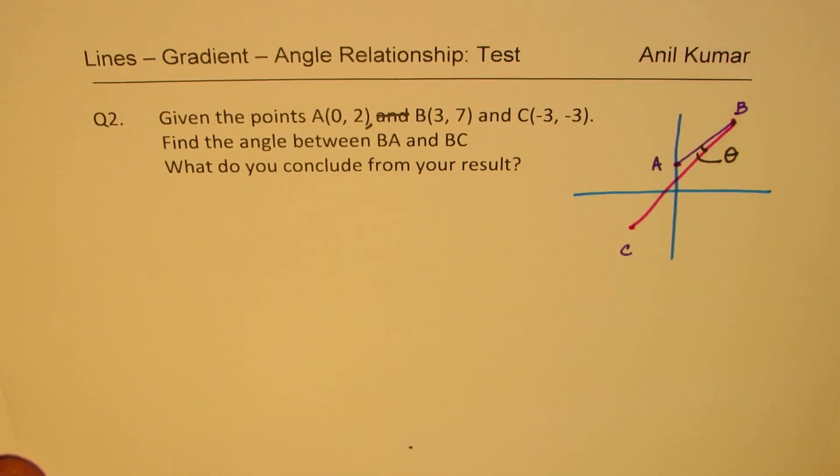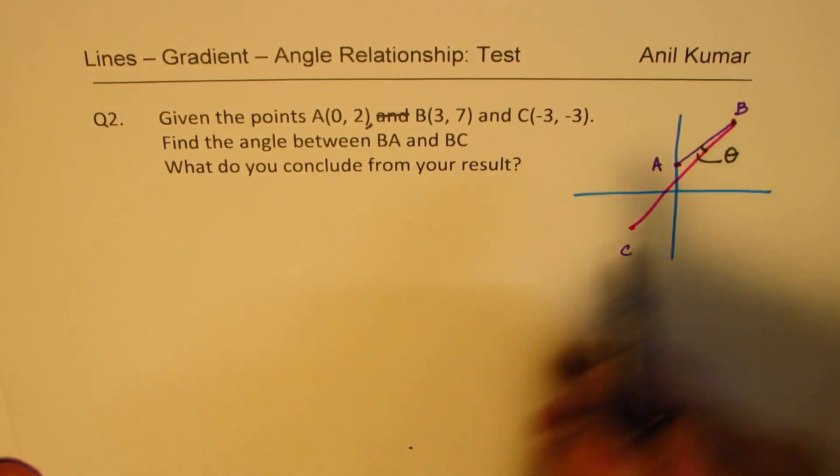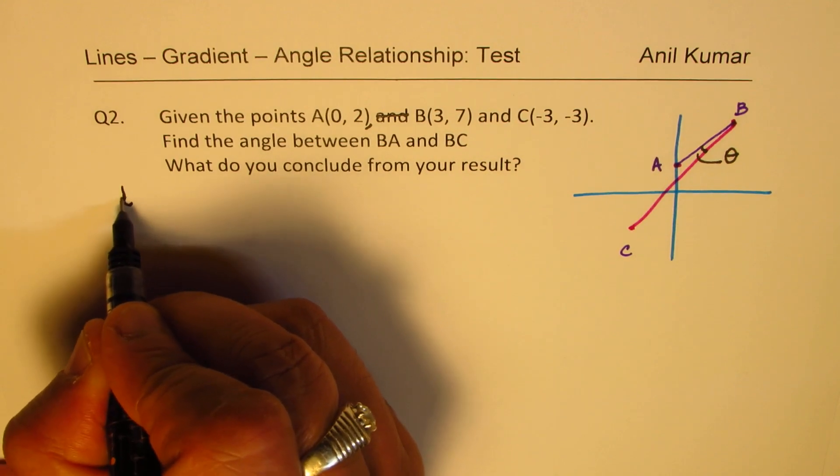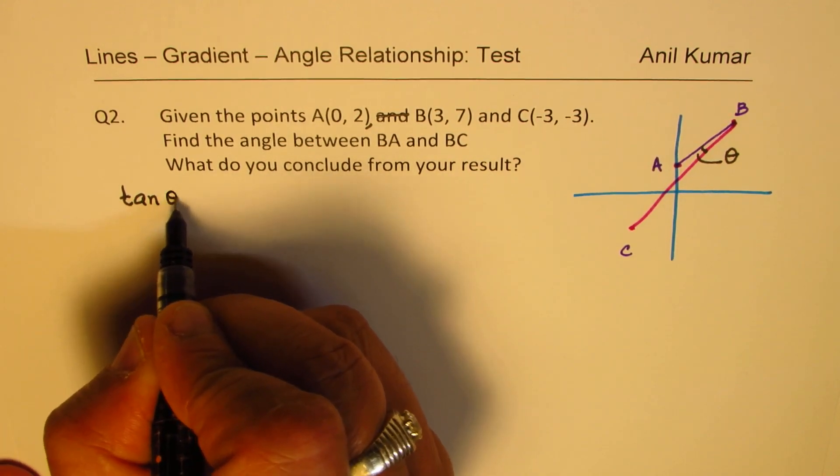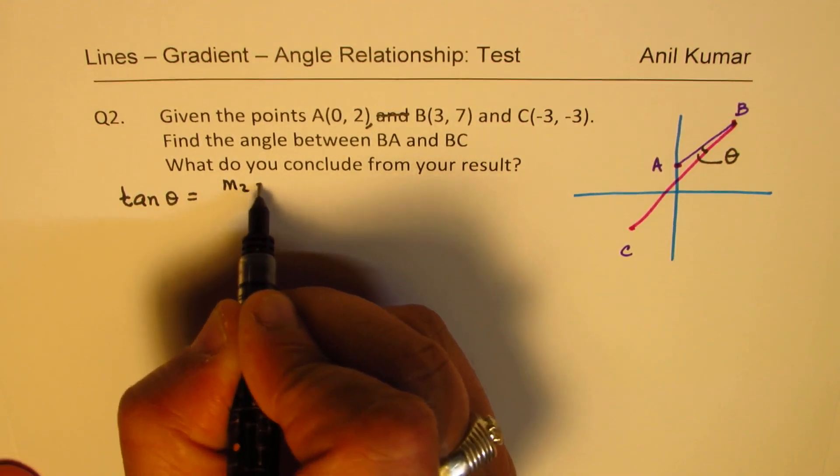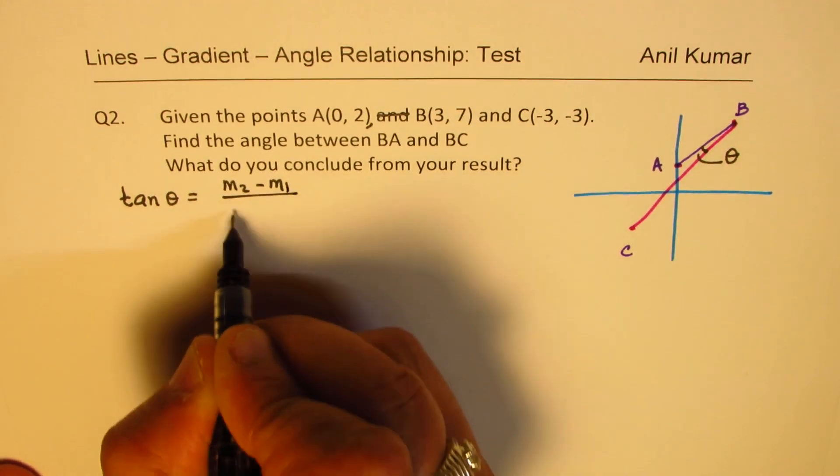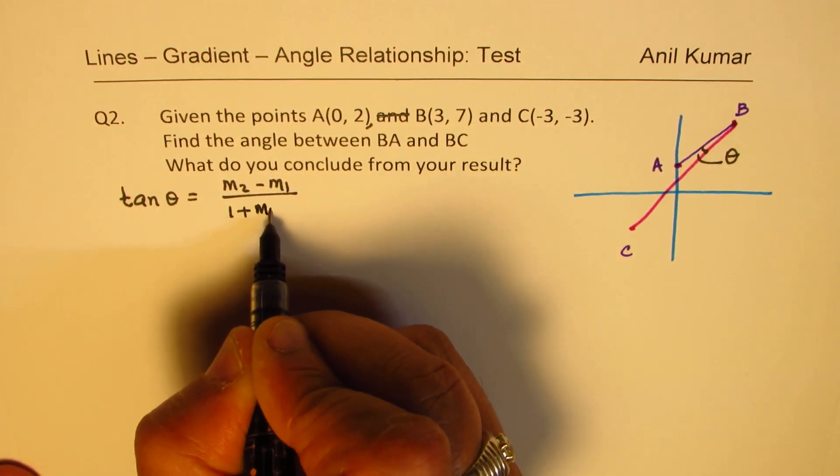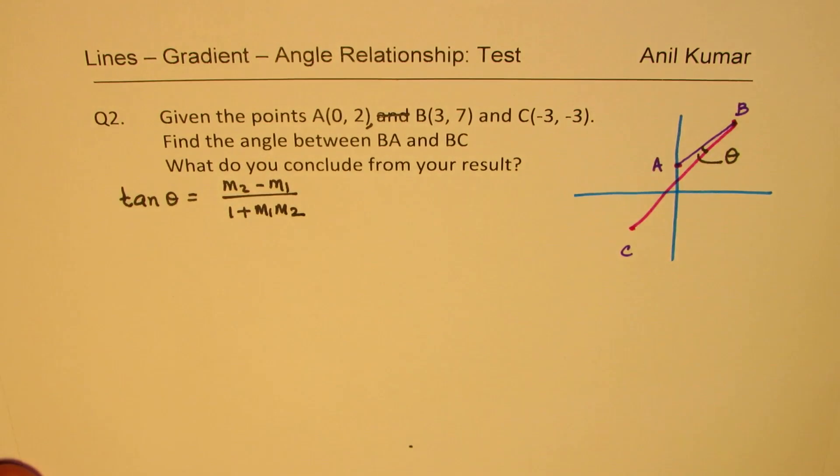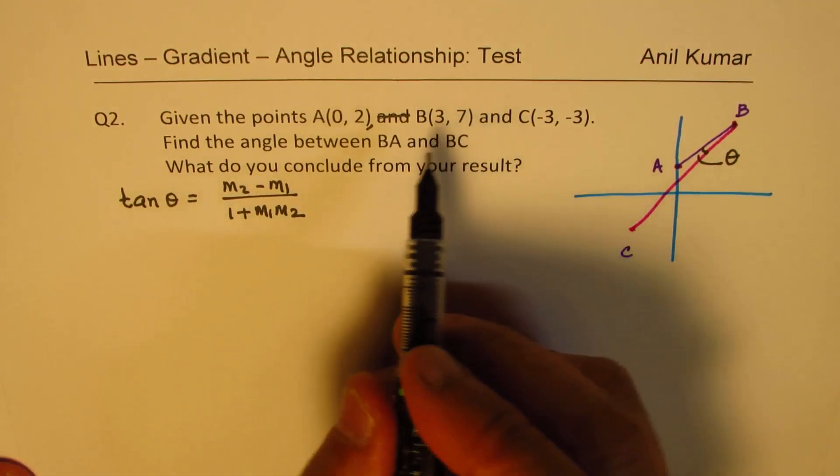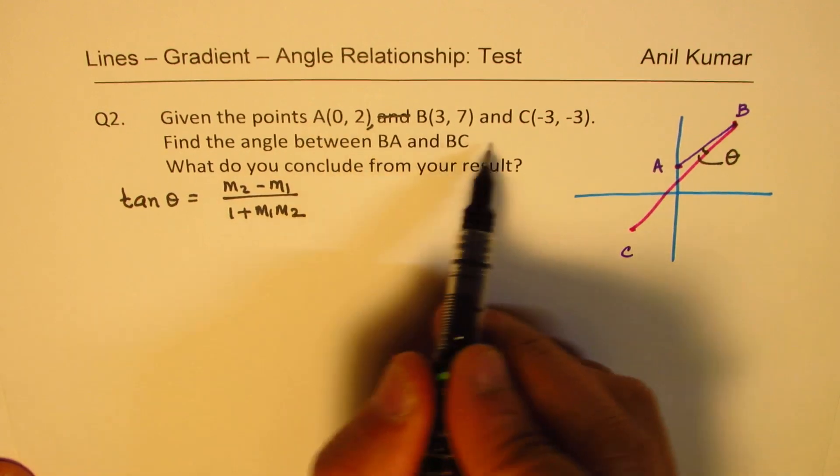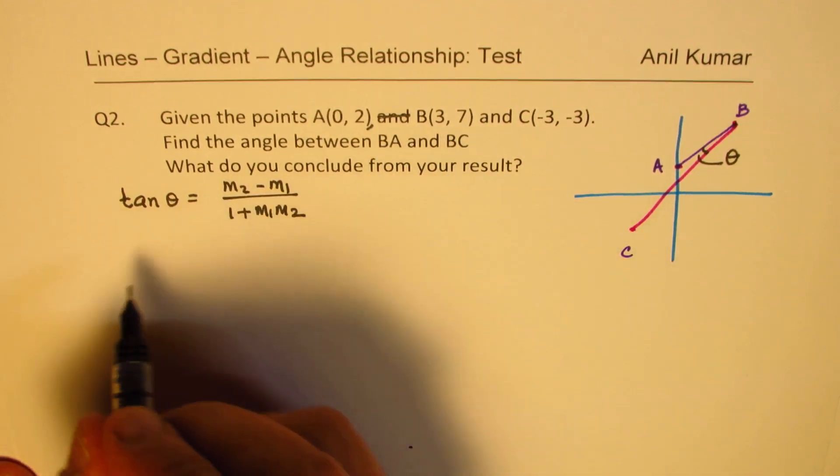So angle between two lines is given by tan θ equals M2 minus M1 over 1 plus M1 M2. Where M1 and M2 are the slope of the lines. So let's find the slope of each of the lines BA and BC.